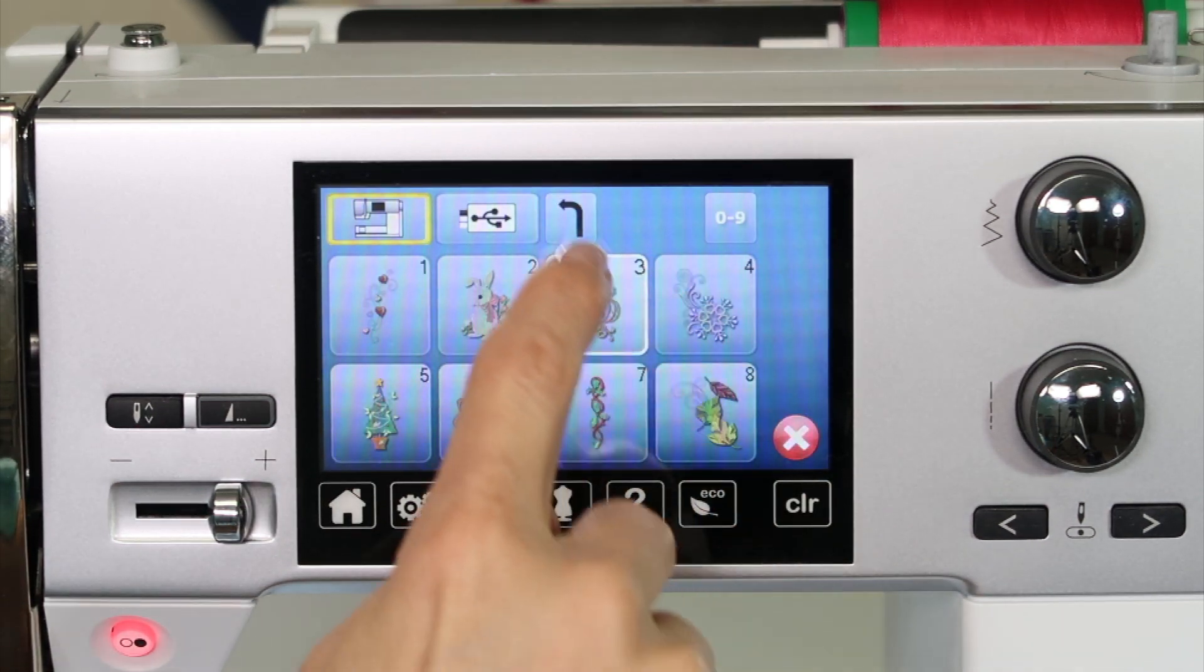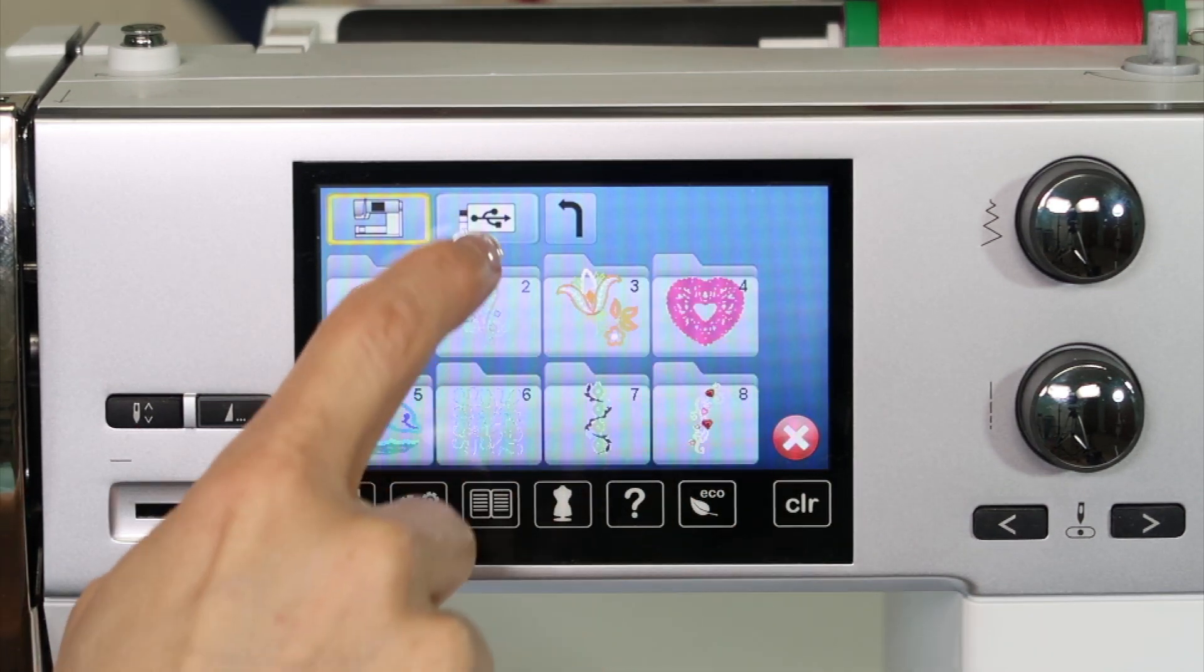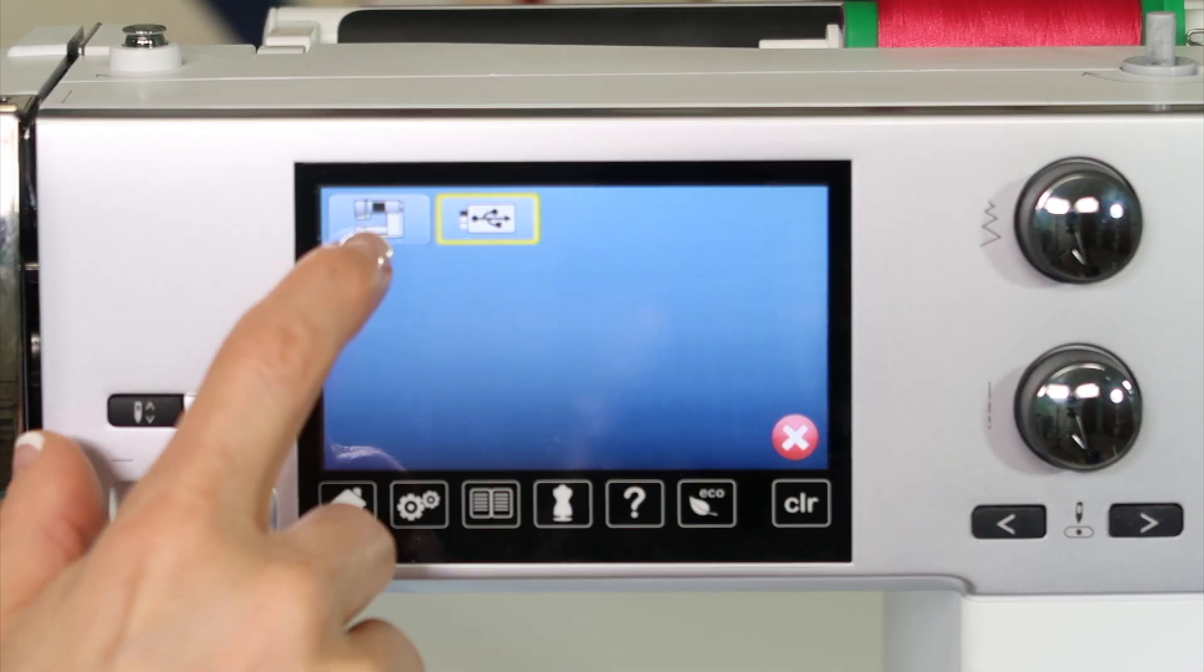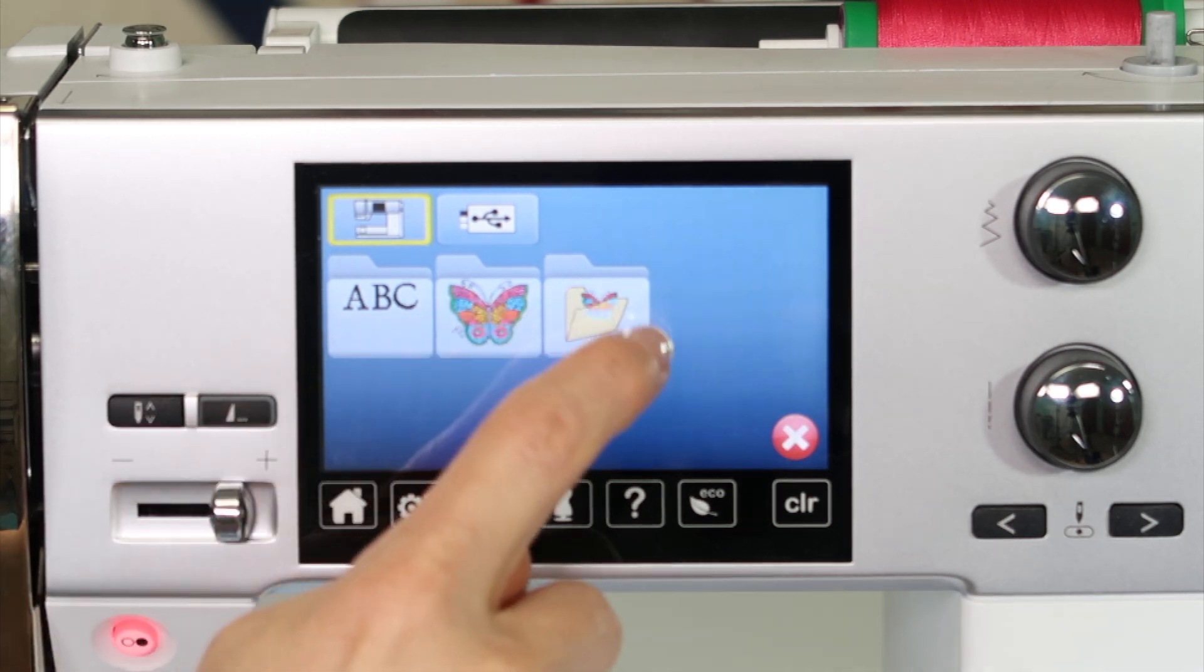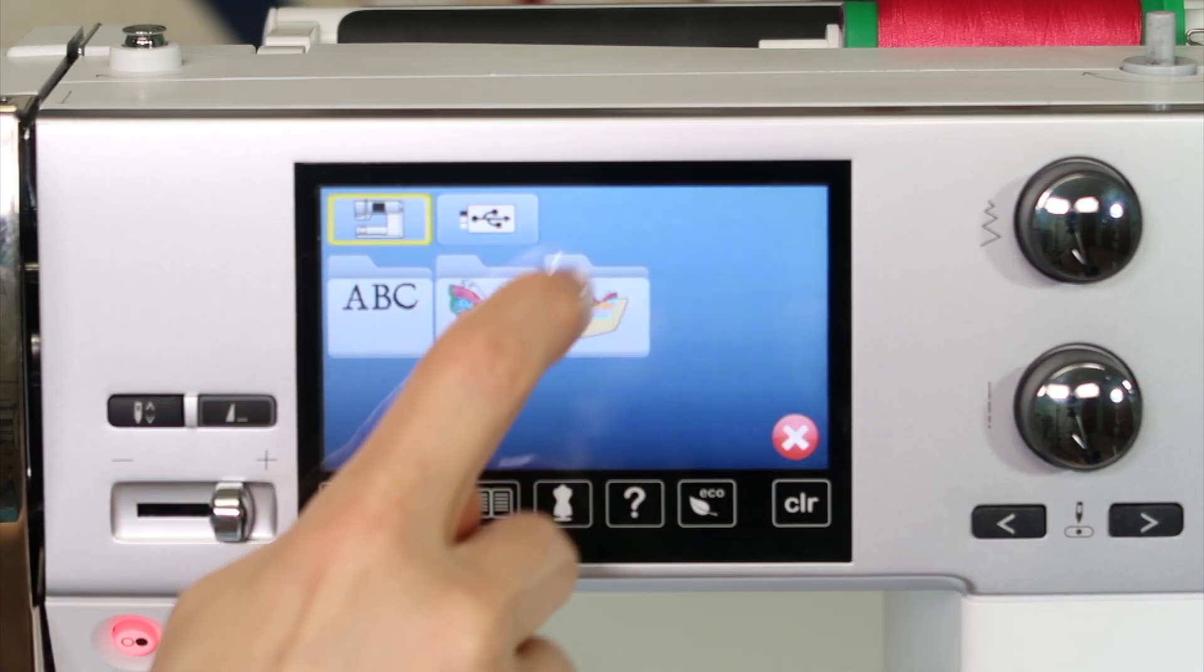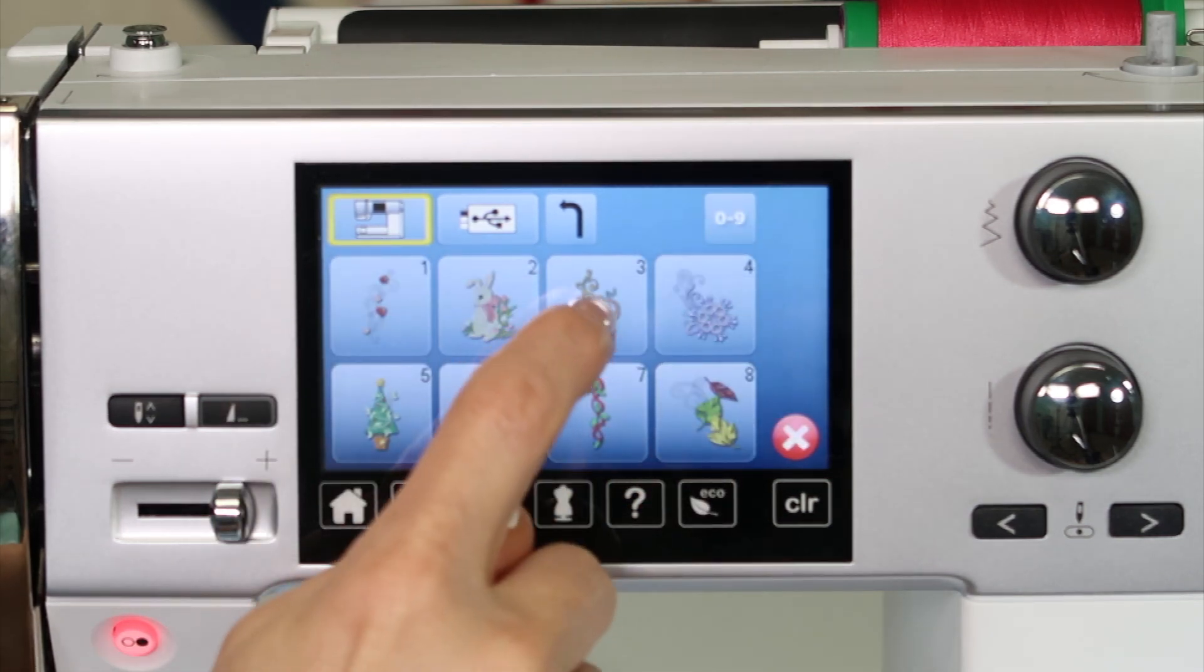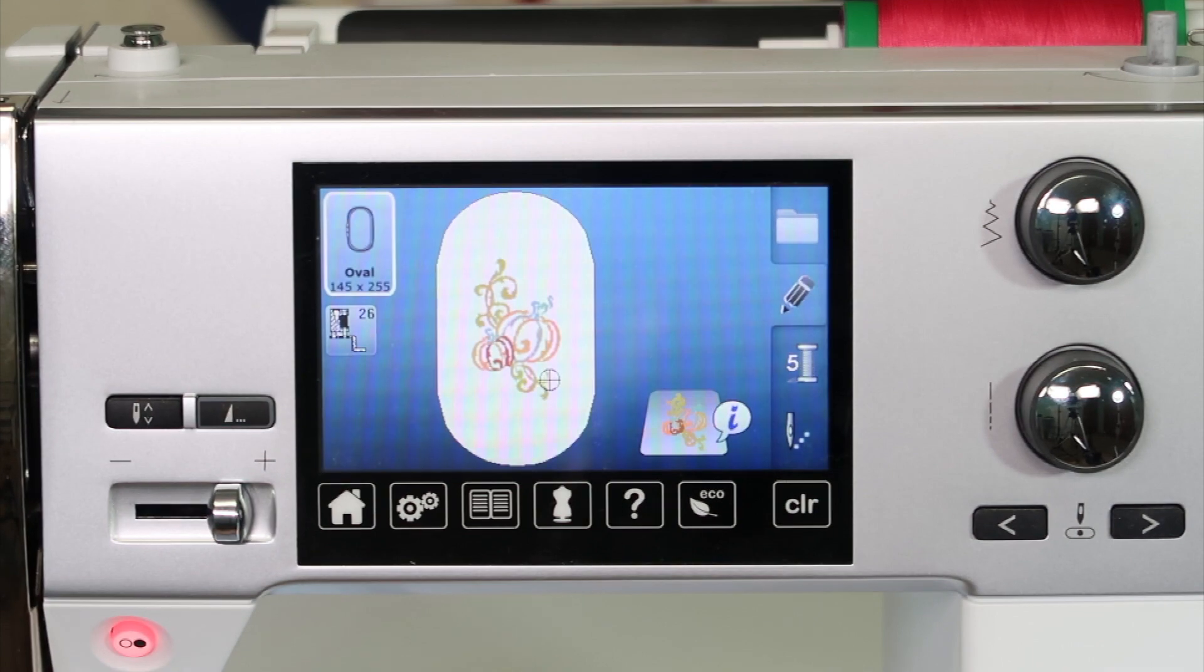The other thing we have here is actually your USB stick, so if you have a USB stick in the machine with designs, you can access it as well. Then designs that you save will hang out here in the folder area. Let's just pick a design. I'm going to go to folder number 8 and pick the pumpkin, kind of a nice fall design for us to work with.